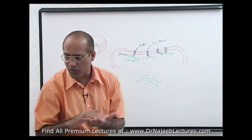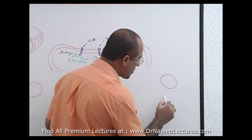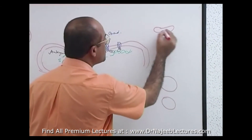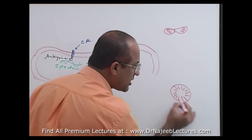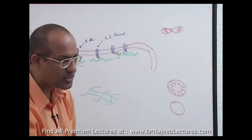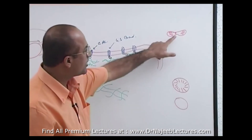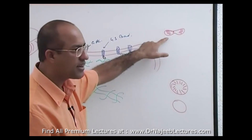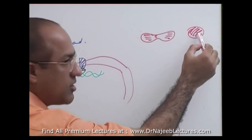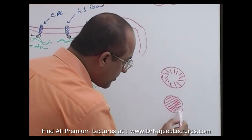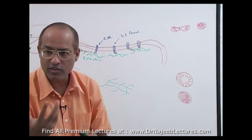On a blood smear, you can distinguish biconcave from spherical RBCs. In a healthy biconcave RBC, there is more hemoglobin at the edge and less in the center, so the center appears pale and the periphery is pink — this is called central pallor. When an RBC is truly spherical, there is more hemoglobin in the center, so it stains uniformly without any central pallor. An RBC without central pallor under the microscope is a spherical RBC.